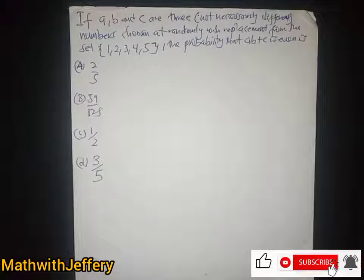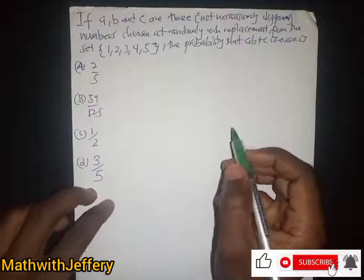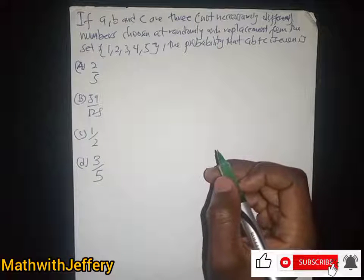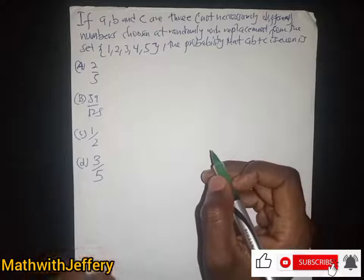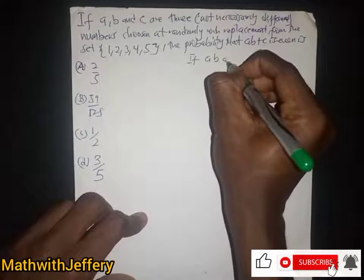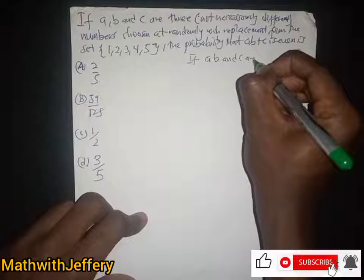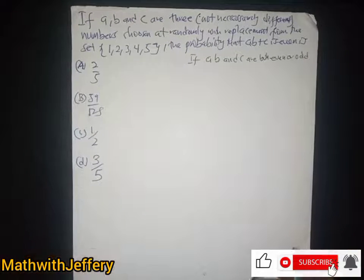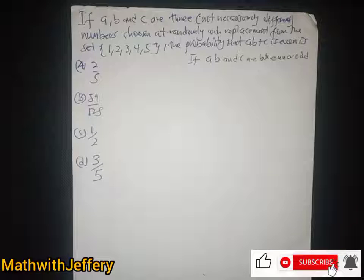What would be the probability when a plus b is even? The quantity a plus b will be even if a and b are both even or both odd. A plus b would only be odd when one of a and b is odd and the other even.